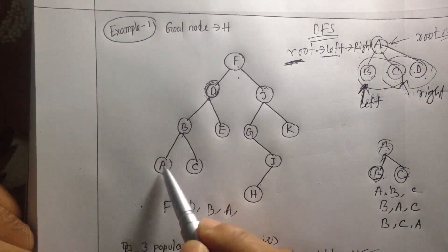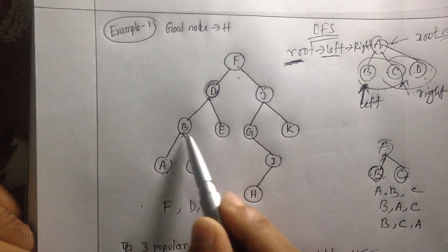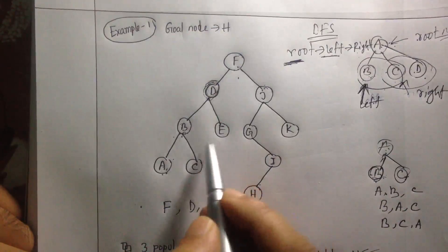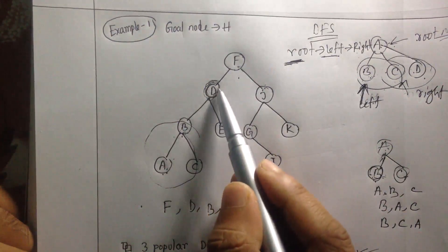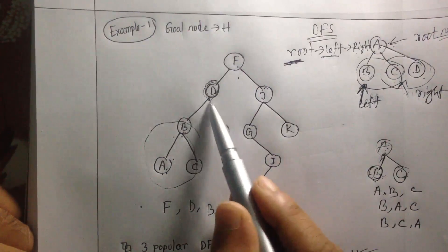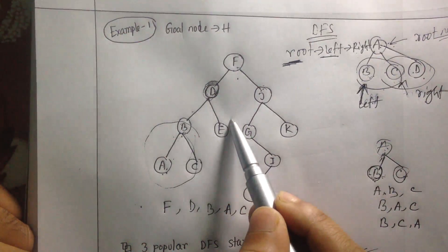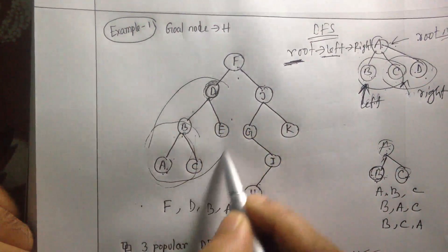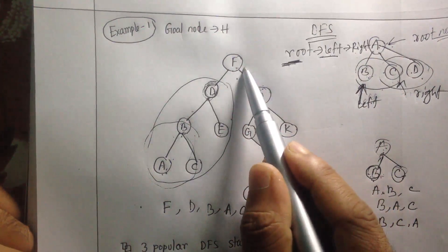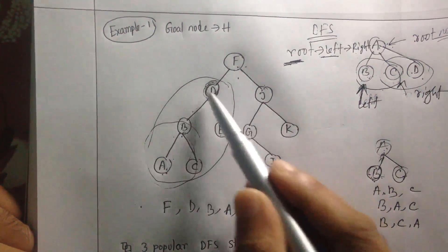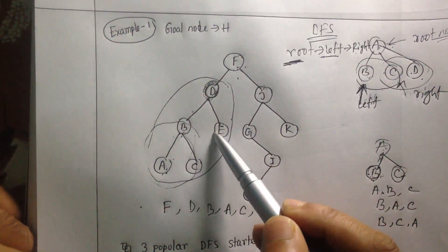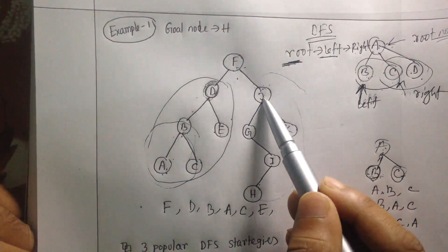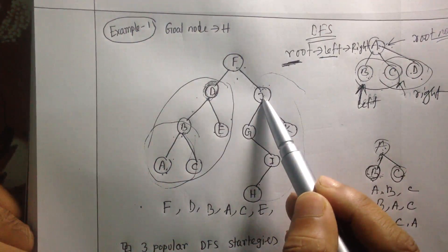Since A has no children, you're finished with root and left for that subtree. Now you can go to the right node, which is C. Then, with D already visited as root, and the left side finished, you go to the right node E. You have now finished the root node F, visited the entire left subtree, and can now move on to visit the right subtree.